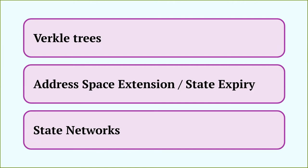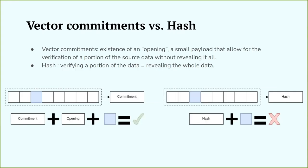Statelessness has three main components. There's vertical trees — the technology we're going to use to make statelessness possible — because it allows for very, very small proofs, much smaller than what we've had until now. There's state expiry, which has been attempted many times in the past but is coming back with a new technique called address space extension that I will cover. And the last component is state networks. Since syncing the state is so difficult, the question is: can you just avoid dealing with all that state? Let's get into vertical trees.